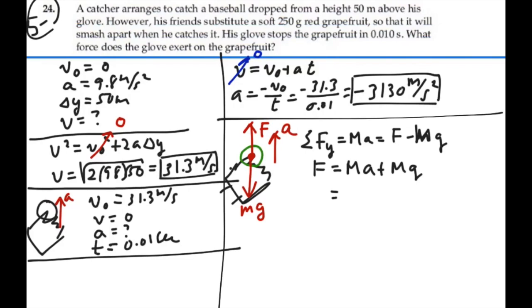So this is equal to 0.25 times the acceleration, 3130 plus 9.8, is equal to 785 newtons. So that's our answer. That's the force of the glove on the grapefruit, 785 newtons.